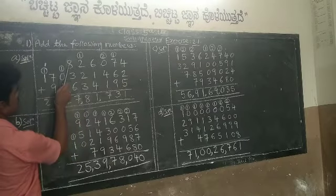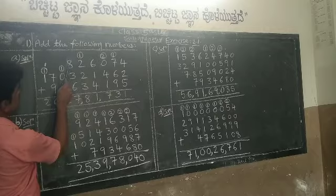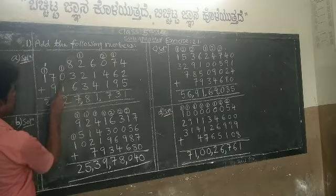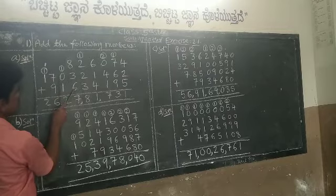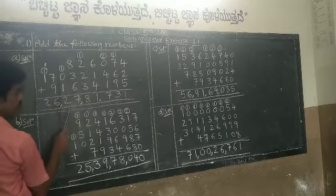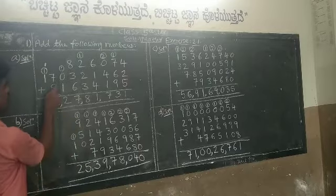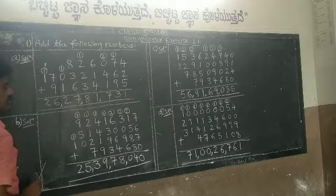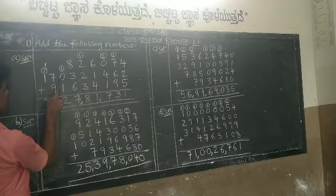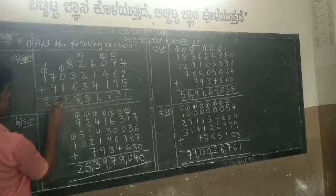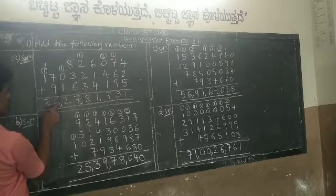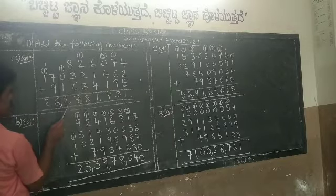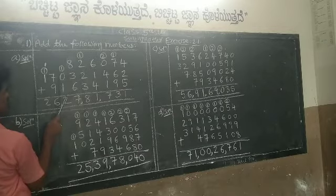In the ten-lakhs place, the digits are 1 (carry), 1, and 0. Add: 1 plus 0 is 1, 1 plus 1 is 2. It is a single-digit number, so write 2 with no carry. Next, go to the crores place. The digits there are only 7 and 9. Add: 7 plus 9 is 16. Write 6 down and carry 1 to the ten-crores place.